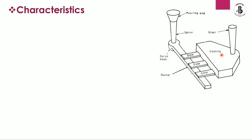During solidification of the molten metal, additional metal is required, which is supplied from the risers. The riser also helps supply that additional metal into the castings or mold cavity. Additionally, air present during pouring of molten metal into the mold cavity escapes with the help of the riser. These are the main functions of risers in the basic gating system.